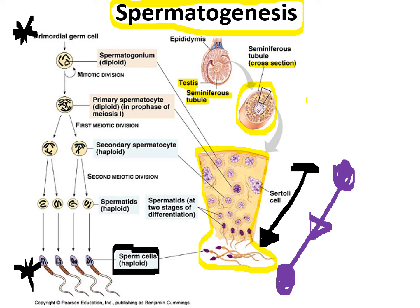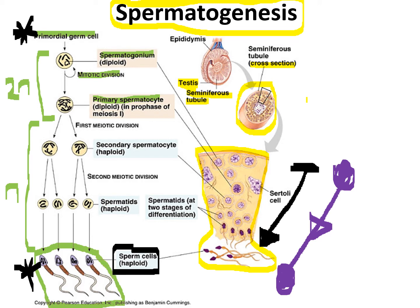The process starts with a primordial germ cell, which grows into a spermatogonium and then undergoes mitosis to form a primary spermatocyte. Everything up to this point is diploid, represented as 2N. Thereafter, meiosis I and meiosis II take place, making the cells haploid, resulting in four sperm cells. These sperm cells receive their nutrients from Sertoli cells. There are also other cells in the interstitial region called Leydig cells, which are responsible for the production of testosterone.